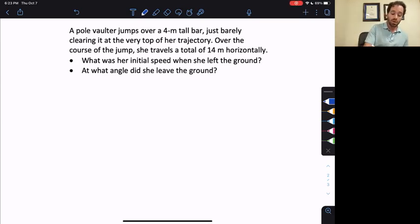We have to answer two questions. What was her initial speed when she left the ground, and at what angle did she leave the ground? We should operationalize these by saying this asks us to find v-naught, and this asks us to find theta. Let's program in what we know. We know, first of all, we should really be drawing a picture.